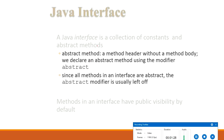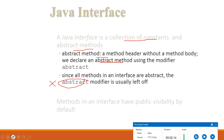A Java interface is a collection of constants and abstract methods. Abstract methods have a method definition but no method body. We use the keyword abstract to declare abstract methods, but in the case of interfaces, since all methods are abstract, the abstract keyword is not required. In abstract classes, however, the abstract keyword is a must.